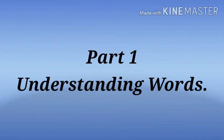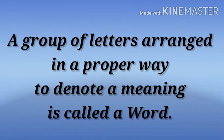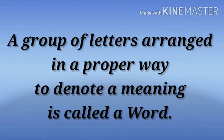In this chapter, first part we will see to understand the words. You are knowing that 26 letters are there. If the letters are arranged in a proper way, then only it will denote a meaning — a meaningful word. But if we arrange them in a wrong way, it is not a meaningful word. A group of letters arranged in a proper way to denote a meaning is called a word.